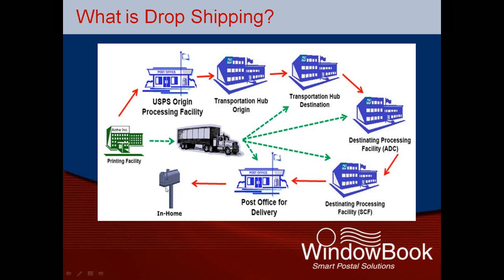Drop shipping bypasses a number of these steps by means of the mailer transporting the mail from the origin facility directly to the destination NDC, SCF, ADC, or even the final delivery unit — shown by the green arrows. Mailers may transport the mail themselves, or they may contract with a third-party consolidator or logistics provider to transport the mail for them.